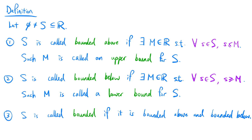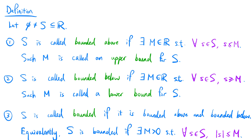s is called bounded if it is bounded above and bounded below. Equivalently, s is bounded if there exists m greater than 0 such that for all elements s in s, the absolute value of s is less than or equal to m.